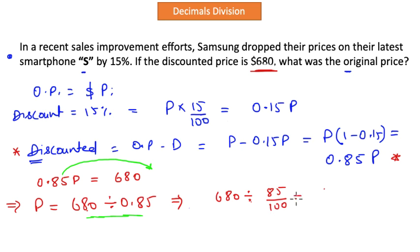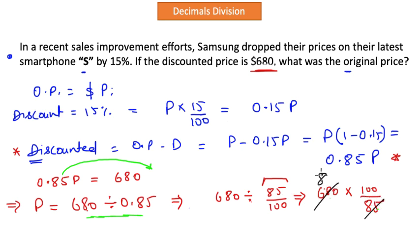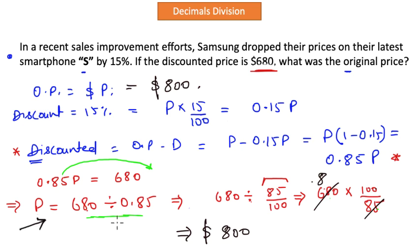Now this is a typical division of fractions problem. We keep the first number as-is, the division sign becomes multiplication, and we invert the divisor fraction to get 100 over 85. Solving: 85 divides 680 evenly to give 8, so the answer is 8 times 100, which is 800. The original price was $800. The key point was modeling the equation and then dividing a whole number by a decimal using the equivalent fraction method.